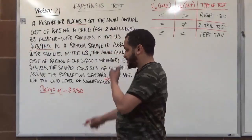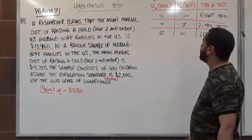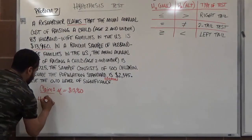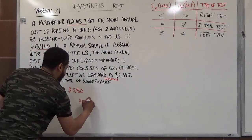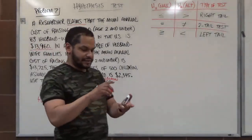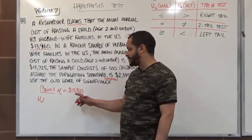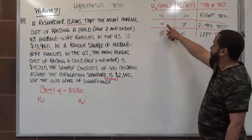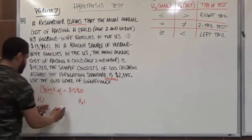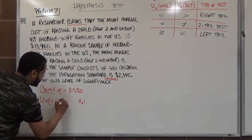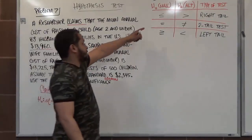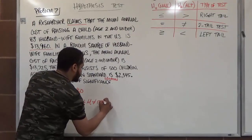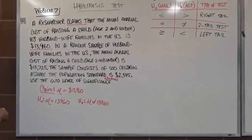The seven-step process for doing a hypothesis test — this is step one: identify your claim. Once you identify your claim, you can use a table to set up your null hypothesis H0 and your alternative hypothesis HA. Steps two and three are to identify those hypotheses. Based on our claim, the mean equals $13,960. Since it uses the equality symbol, we match it to the null hypothesis: H0: μ = $13,960. The alternative is always paired with the null, so HA: μ ≠ $13,960.